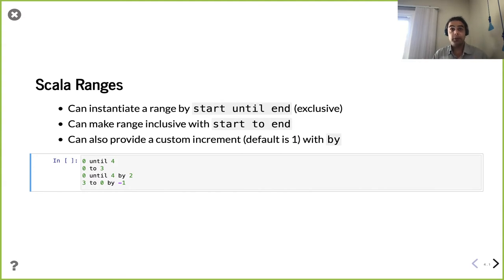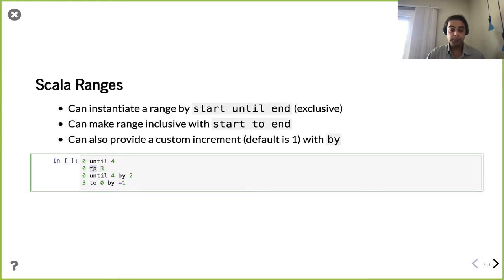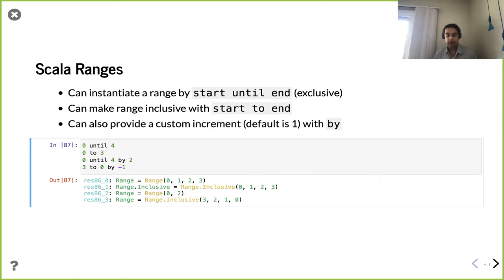The first thing we're going to work with is what we call a Range. This is a thing inside of Scala — as the name implies, a way to encode a numeric range. This is really helpful if you want specific numbers, and we're going to use this to define our iteration space for our for loops. The syntax in Scala has an almost English-readable style: you have a start, `until`, and then the end. `until` is exclusive, so `0 until 4` is 0, 1, 2, 3. If you want inclusive bounds, you can use the word `to`. You can also change the step size or even reverse the order with a negative step.